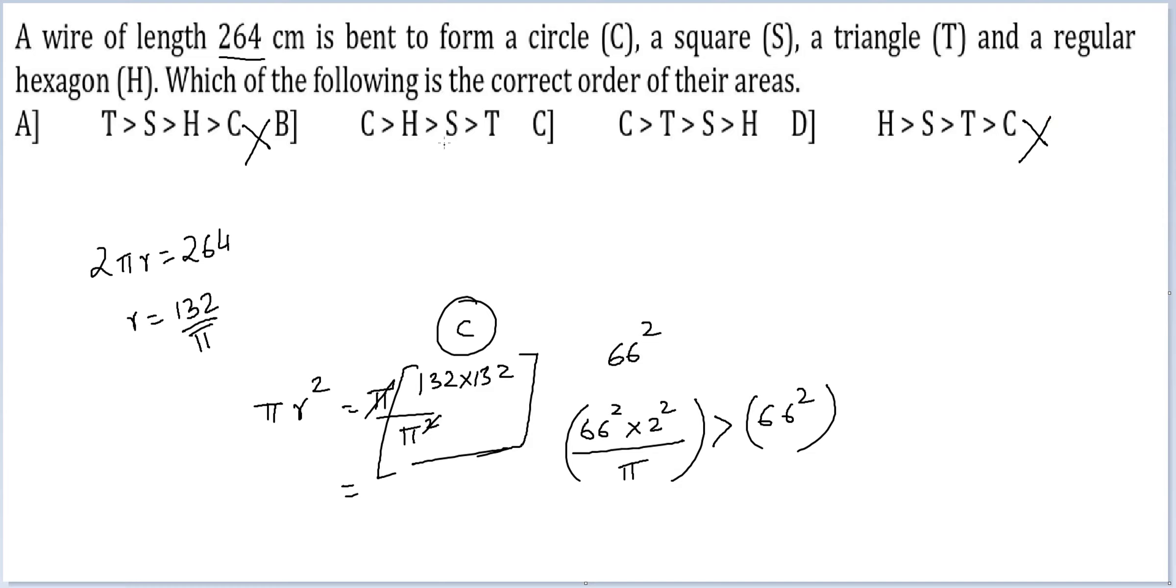Here, S and T. Let's look at S and T. 264 divided by 3 should be 88. So √3/4 × 88². I am trying to compare it to 66². Let's see.